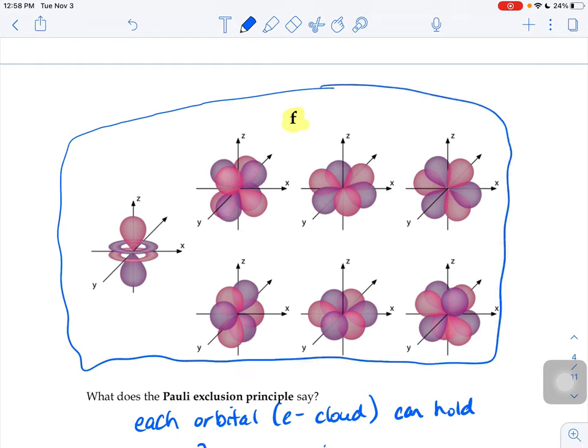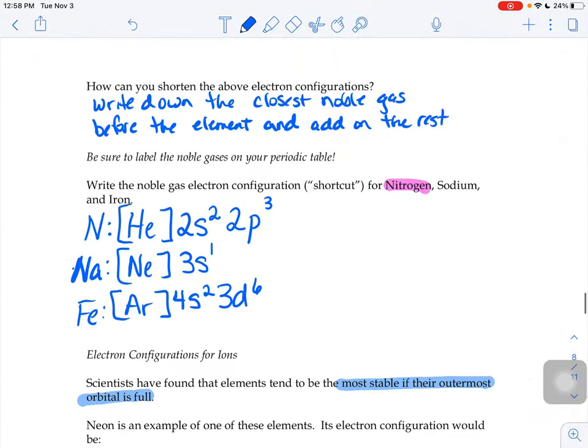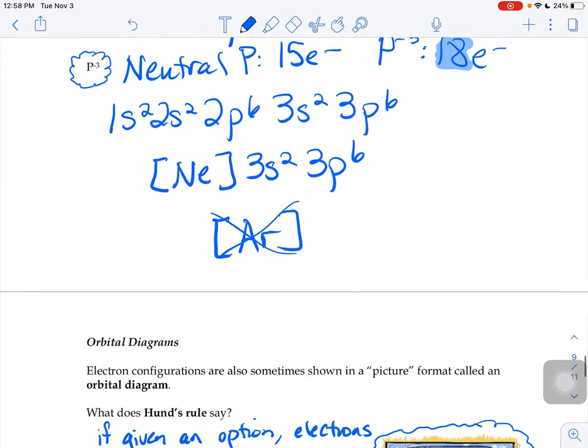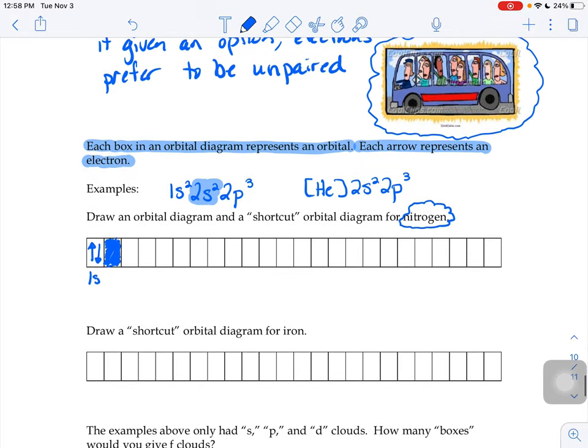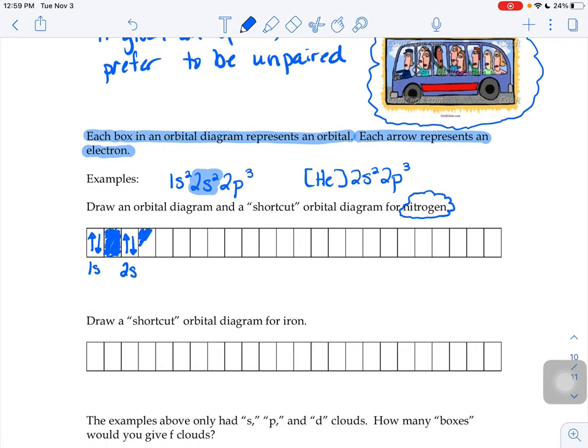So I want you to keep that one, three, five, seven idea in the back of your mind. So when we draw our S clouds, there's only one way to draw an S cloud, right? So we're going to give it one box. That next box represents the 2s. And our electron configuration says there's two electrons that are going into that 2s cloud. So the first little electron gets on the bus, empty seat. Second one's forced to pair up.